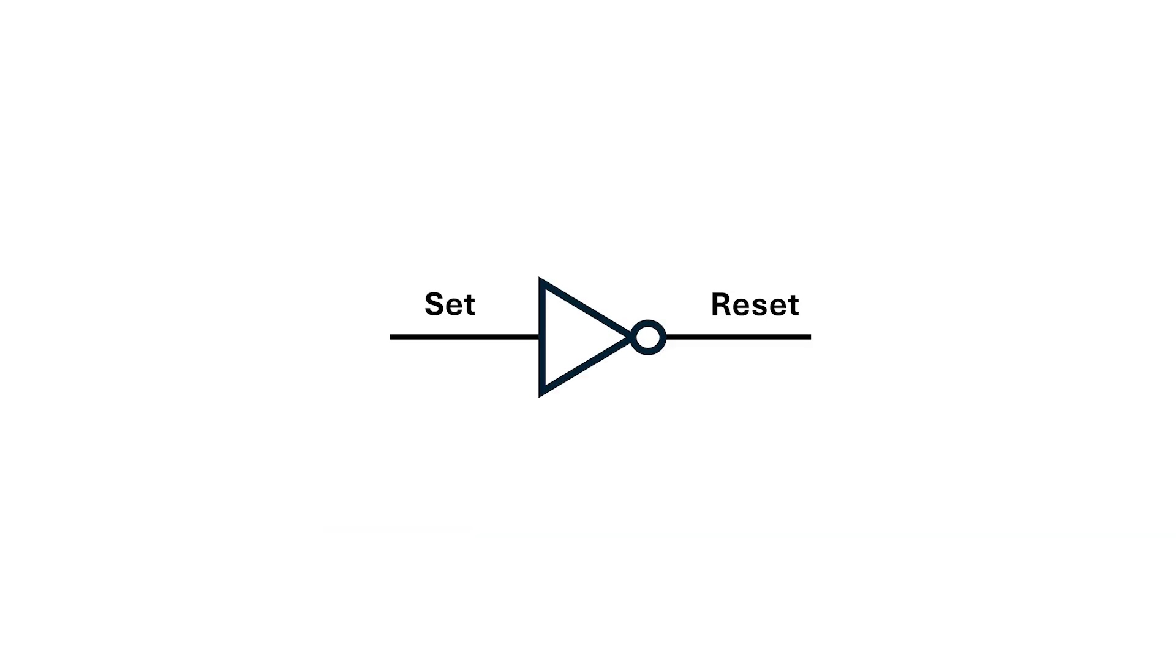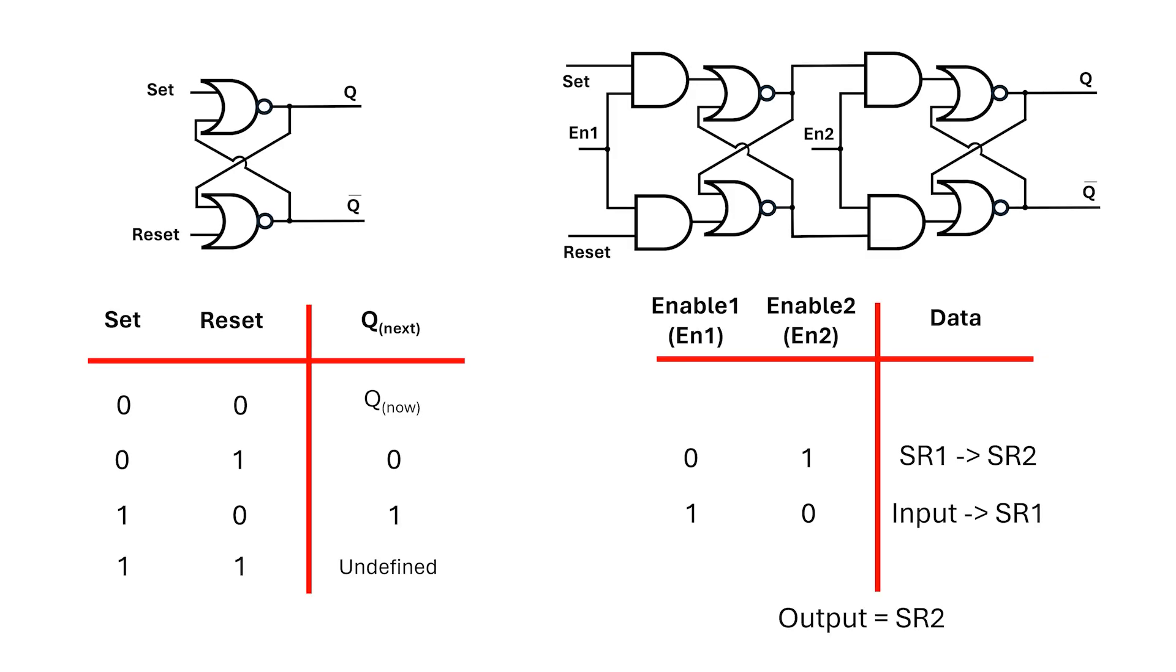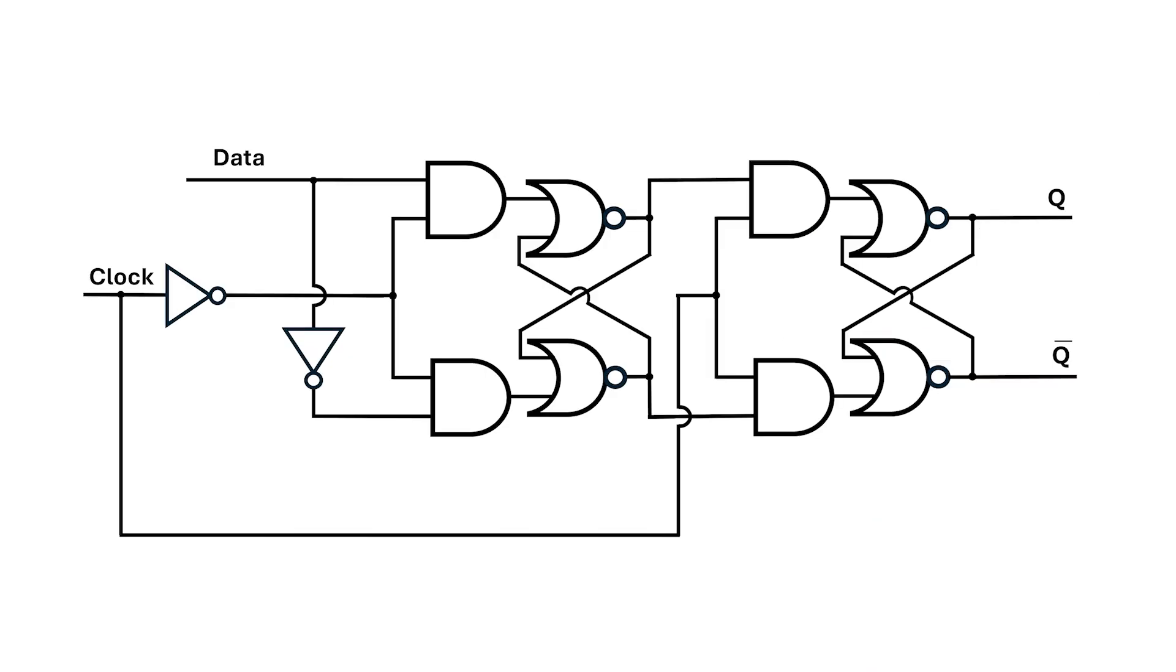I'm going to use the same trick here and make reset the inverse of set. This also removes the 0, 0 and 1, 1 cases from the truth table for the SR latch. Now, for all possible inputs, the function is well defined and there's no race around condition. Finally, I'm going to change the name of the set input and relabel it as data or just D. This becomes the famous D-type flip-flop and it's probably the most used circuit inside computers.